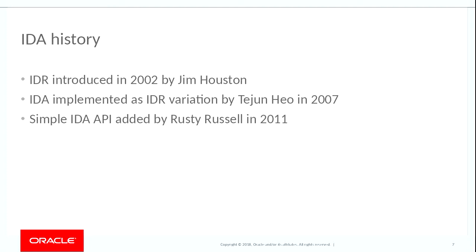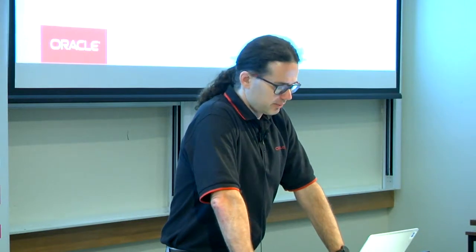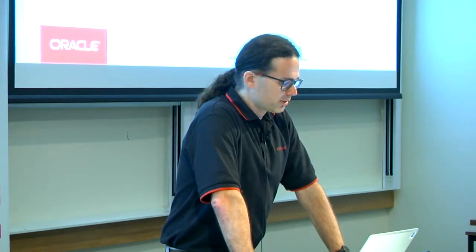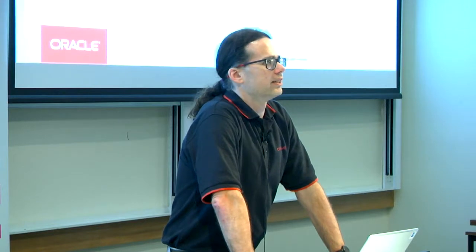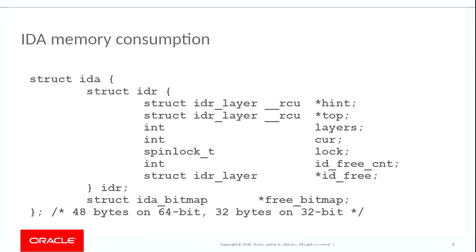A little bit of history: back in 2002 the IDR was introduced. Tejun, who is now in charge of cgroups, implemented the IDA as a variation of the IDR back in 2007. Then Rusty got a little bit annoyed trying to use the API Tejun had written, so he added a simple API which wraps around the more complicated one — that happened in 2011. Rusty told me he was hoping somebody would come along and finish cleaning up the API for him, and it wasn't until 2018 that I did that.